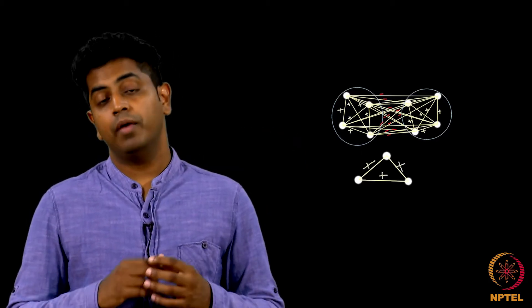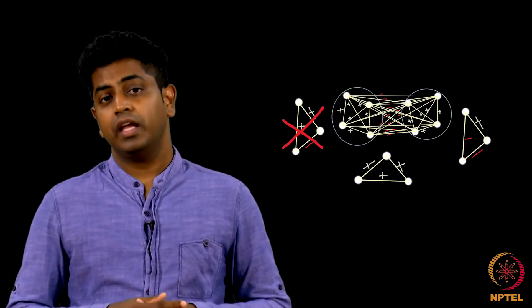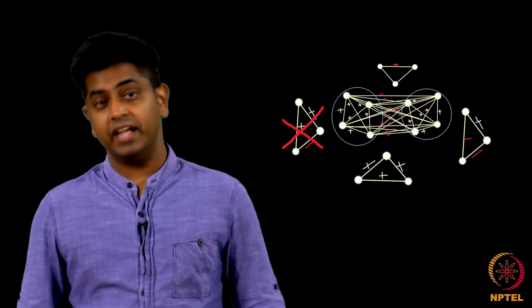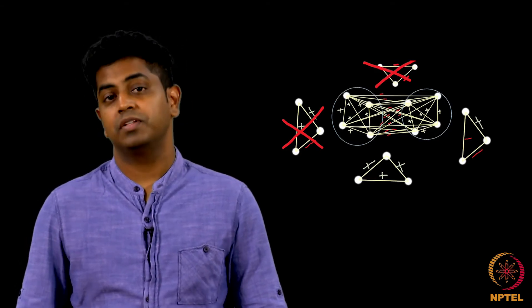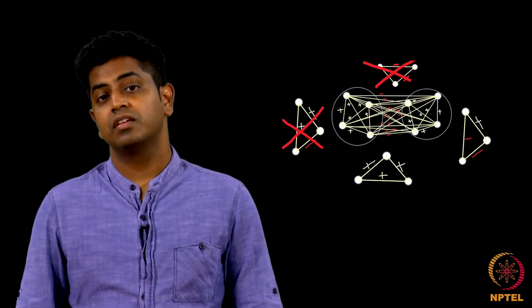Why? Let me take a triangle here. A triangle here is either positive-positive-positive as you observe, or positive-negative-negative. Can you find a triangle here which is positive-positive-negative? Plain impossible. Can you give me a triangle which is negative-negative-negative? No, impossible — which means this is structurally balanced.